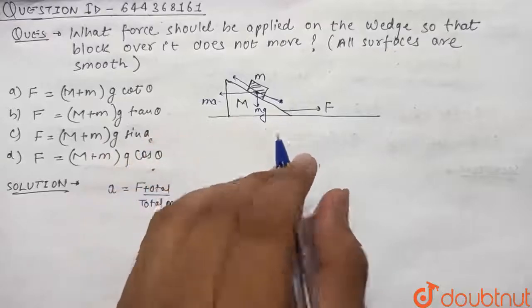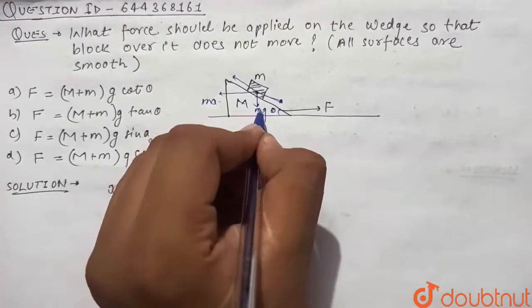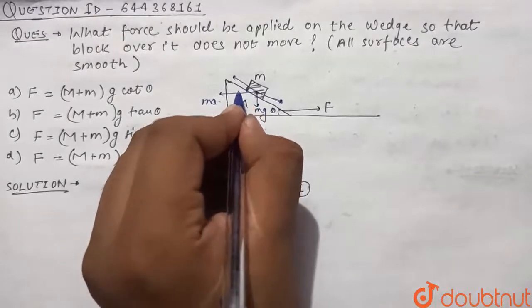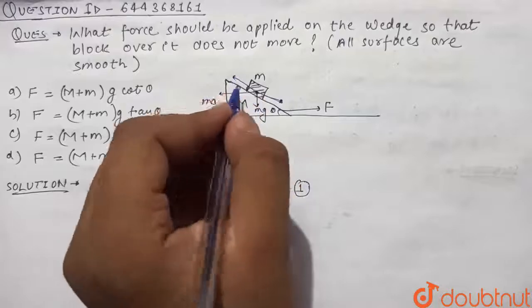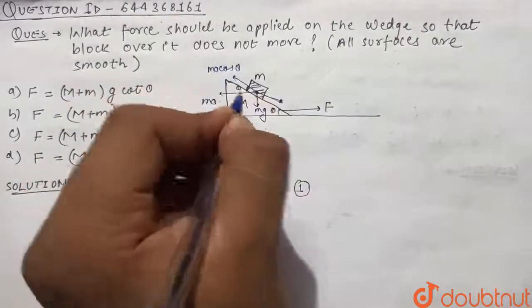Now let us assume that this angle is theta. Then this angle, that is the angle between the wedge and horizontal, is also theta.